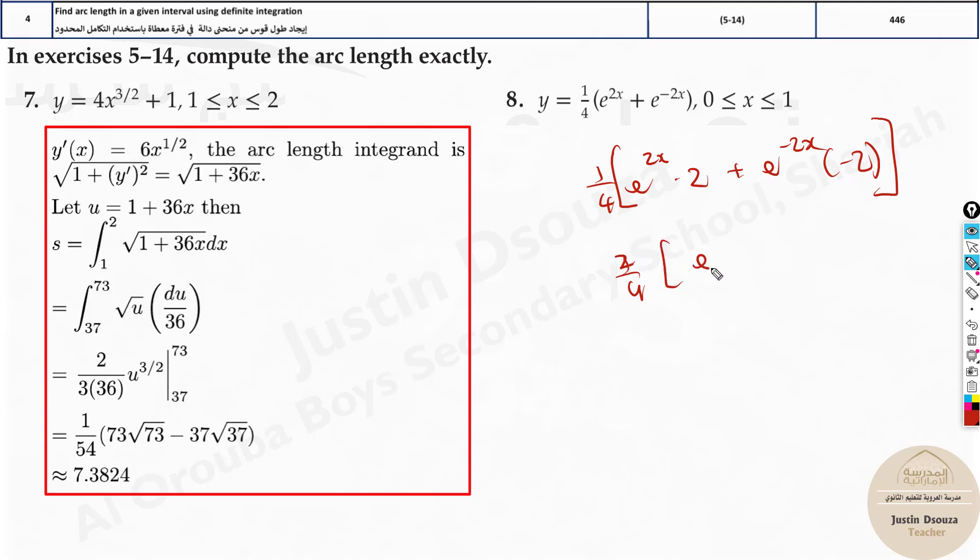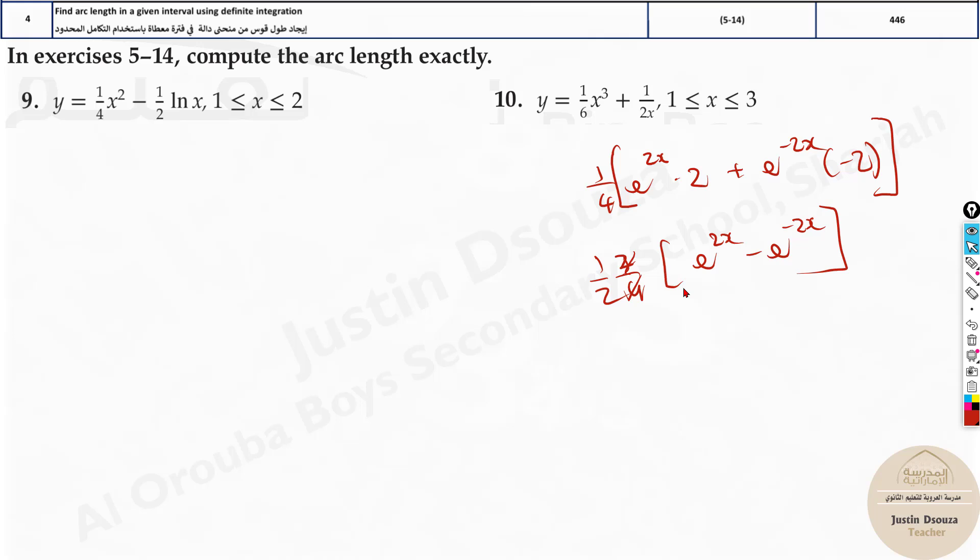And this 2 and 2 can be taken out, it will be out in the numerator. So you're remaining with e to the power 2x minus e to the power minus 2x, and this is basically half here, 1 by 2. So you can put this in the calculator and solve it up. This is the derived f prime of x. And the answer will be 1.81.